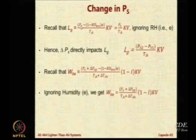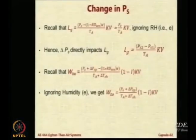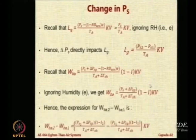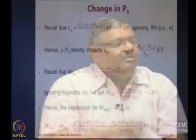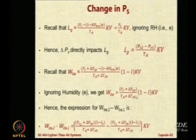Suppose we again ignore humidity since it is only about 1.6 percent — we get a simple expression by removing that numerator term. Then WBA_2 minus WBA_1 gives the difference in ballonet air weight. In this expression, first put PS = PS_1 with inflation fraction (1 minus I_1), then PS = PS_2 with (1 minus I_2). Recall that the inflation fraction will change even though only PS is changing, because whenever air in the ballonet is expelled or taken in, the inflation fraction cannot remain the same. Taking the difference of the two expressions gives WBA_2 minus WBA_1.